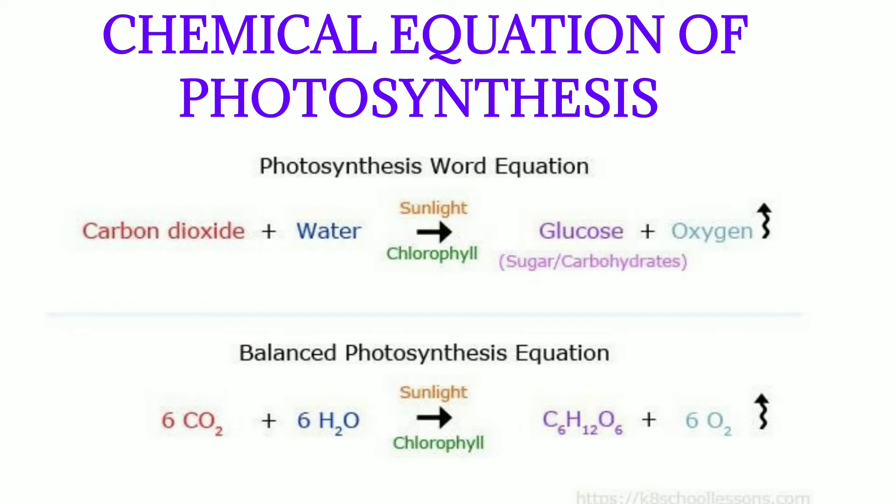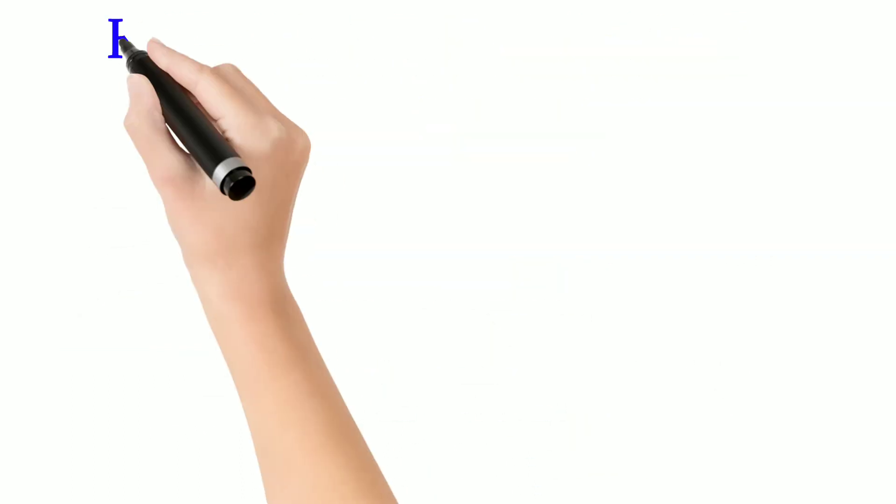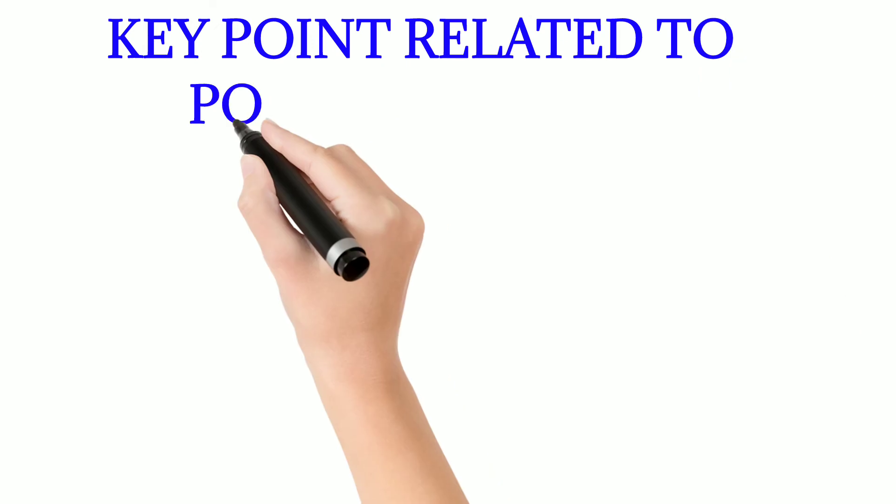sugar or carbohydrate, plus oxygen which is released. The chemical equation: 6CO2 plus 6H2O in the presence of sunlight and chlorophyll gives C6H12O6 plus 6O2, which is released into the atmosphere.